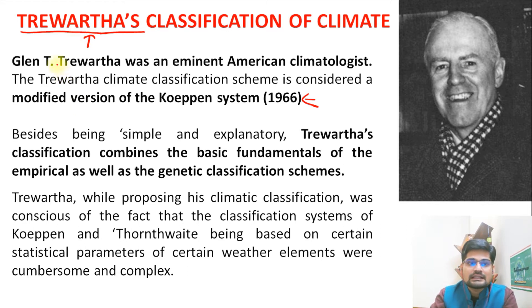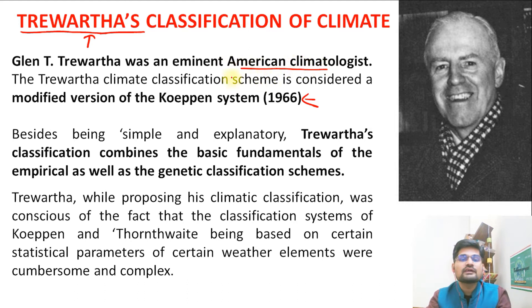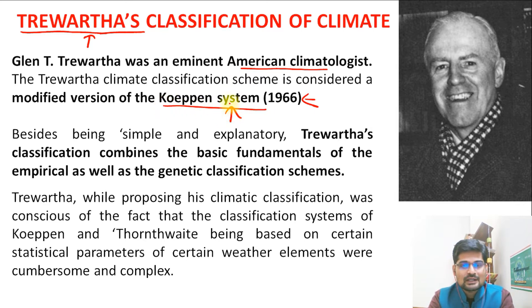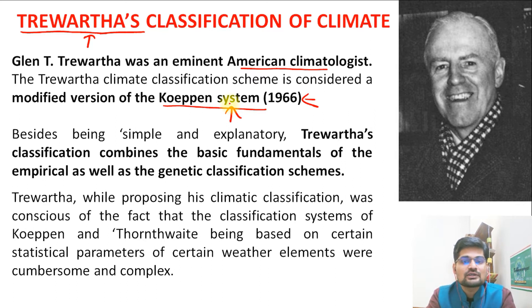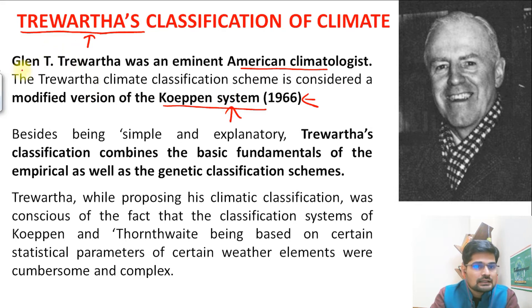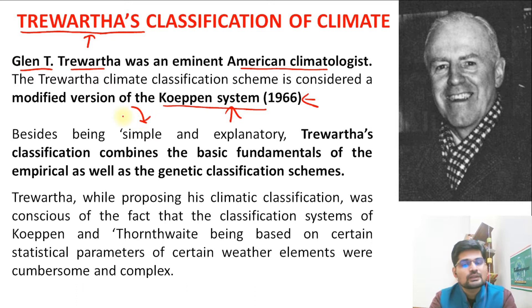Glenn T. Trewartha was an eminent American climatologist who classified climates on a modification of what existed in the Köppen system. In the 1960s, during the quantitative revolution in geography, when different sciences and technologies were developing, Glenn T. Trewartha came into the picture and tried to simplify the explanation of Köppen's climatic system.